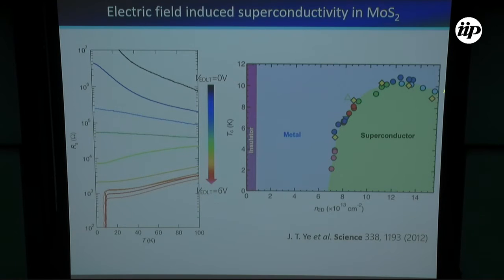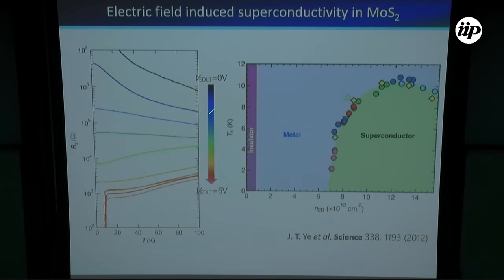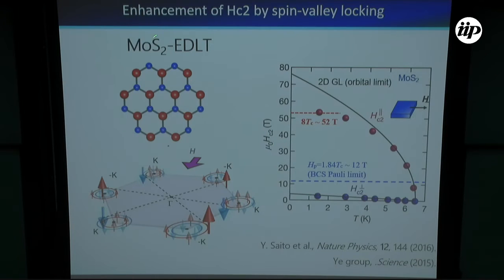Here, TC shows a dome-like structure. Up to the insulator-to-metal transition, you are able to reach by conventional field-effect transistor technique. But in order to reach the superconducting region, you inevitably need this electrolyte gating technique. With this, we are investigating the HC2 enhancement.